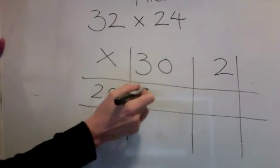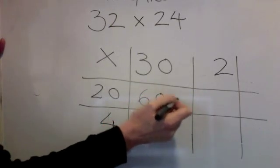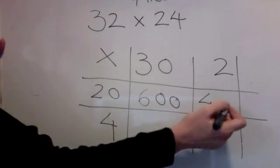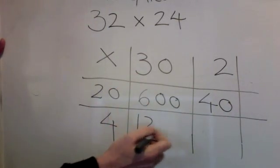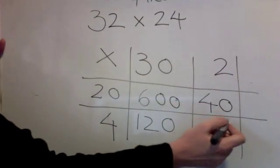2 times 3 is 6, one, two. 2 times 2 is 4, one. 4 times 3 is 12, one, zero. 4 times 2 is 8.